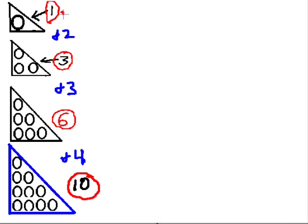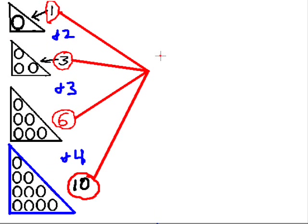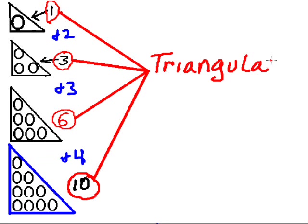So, with one I can make a triangle. With three I can make a triangle. With six I can make a triangle. With ten I can make a triangle. What do you think we call these kinds of numbers that you can make triangles out of? Would you like to guess that we call them triangular numbers? These are triangular numbers.